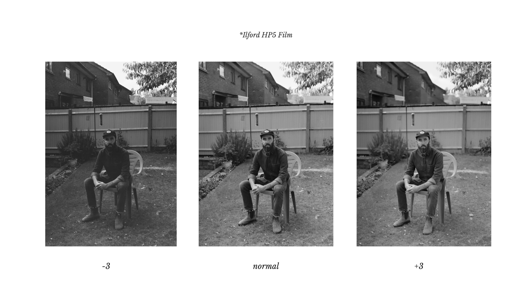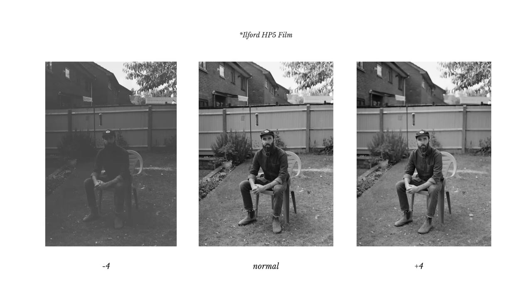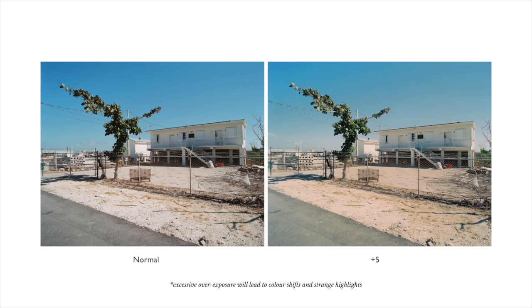The solution to this: eventually your goal should be to learn how to expose as precisely as possible. But especially when you're first starting out, knowing that underexposure is going to give you problems right away, and overexposure gives you a little bit of room to play with, you should always err on the side of caution. Give your film a little bit of extra light — maybe half a stop or a stop — just to avoid any problems.